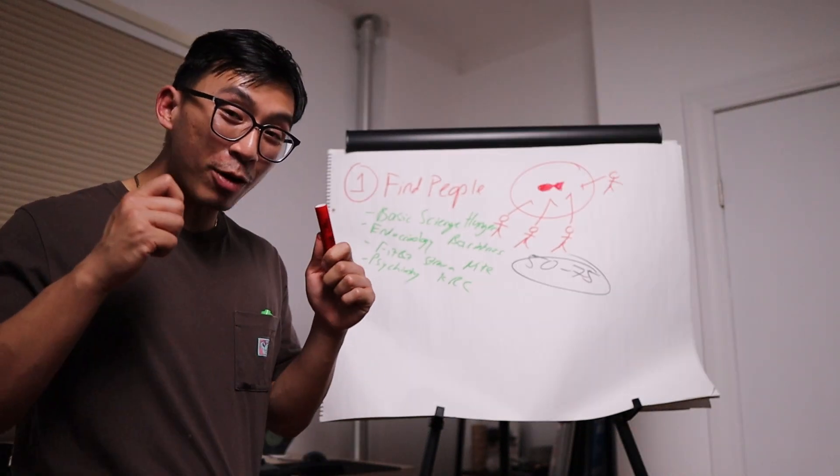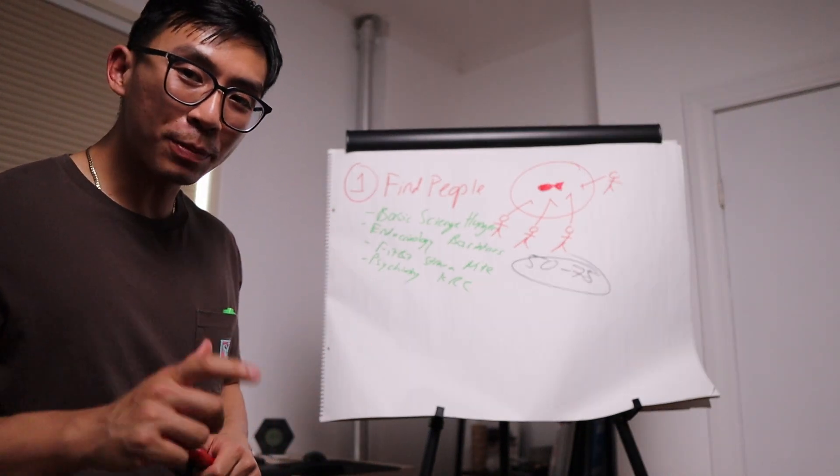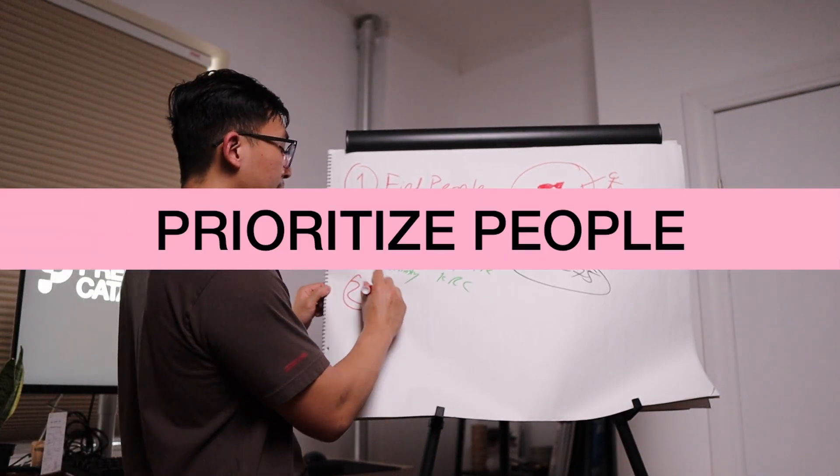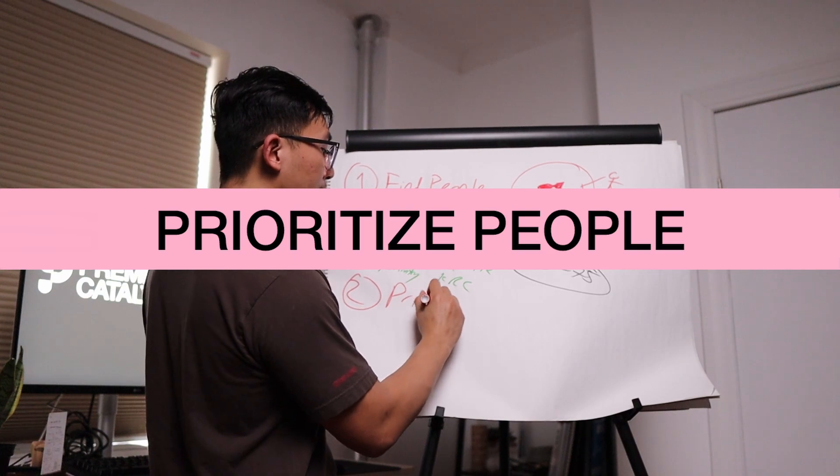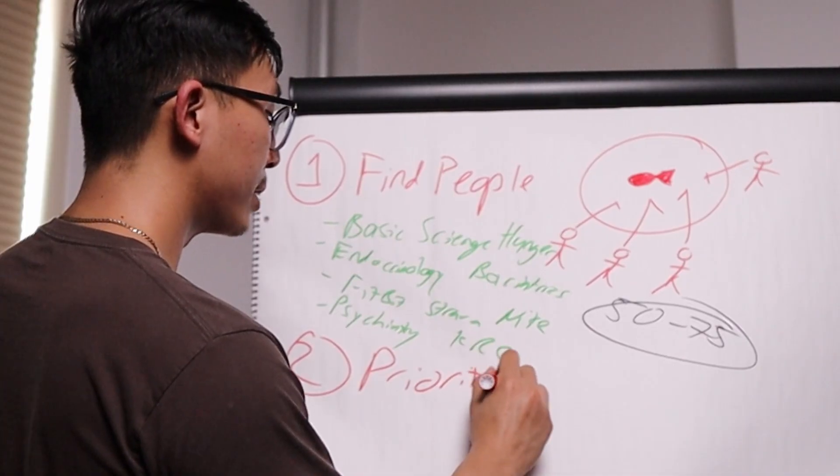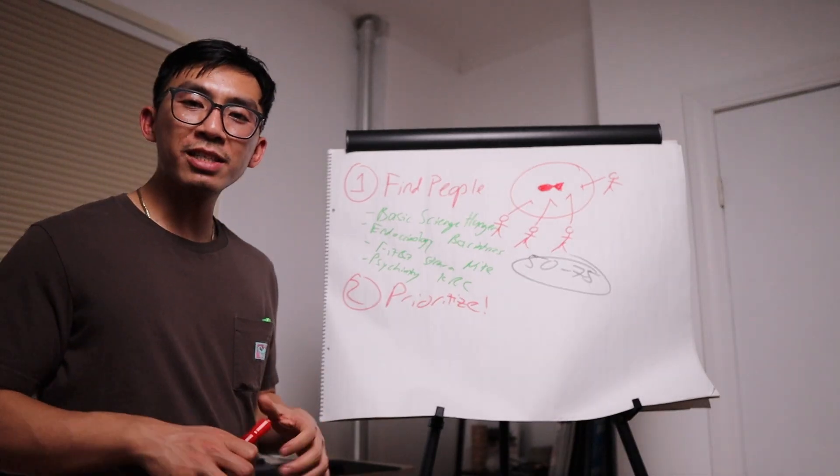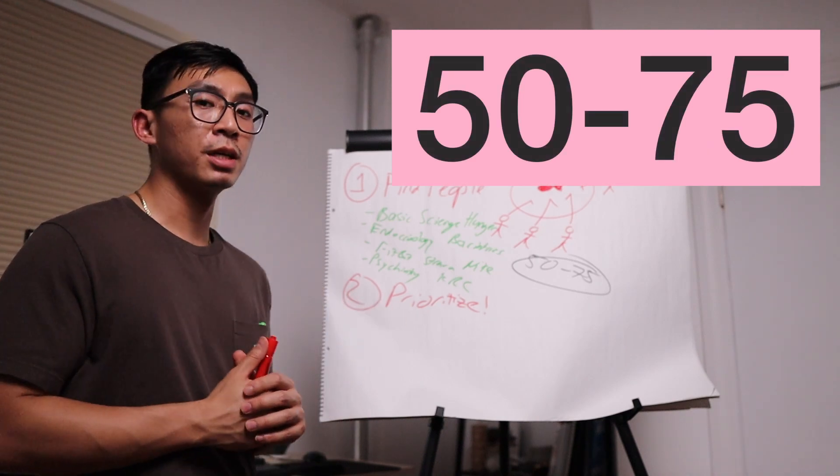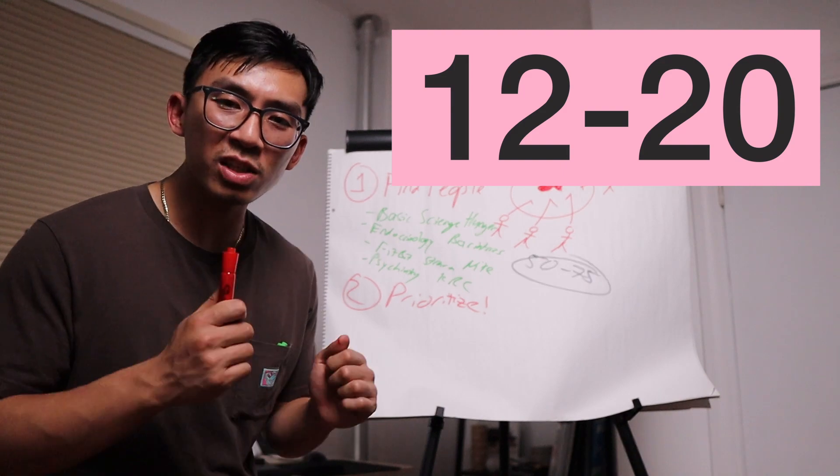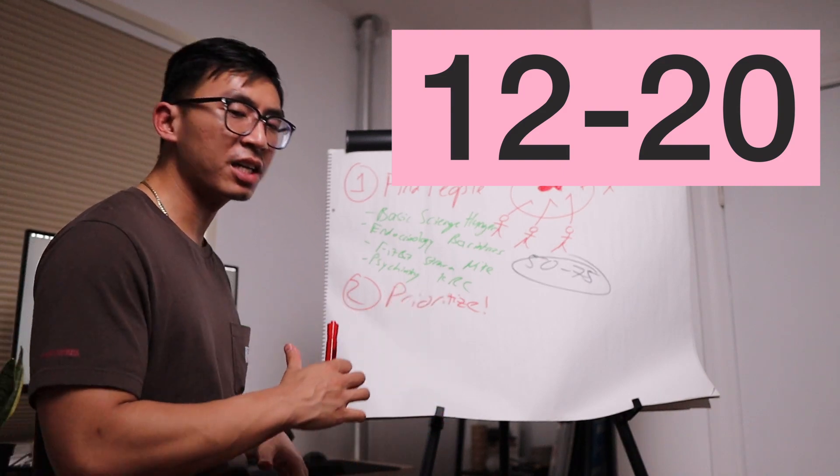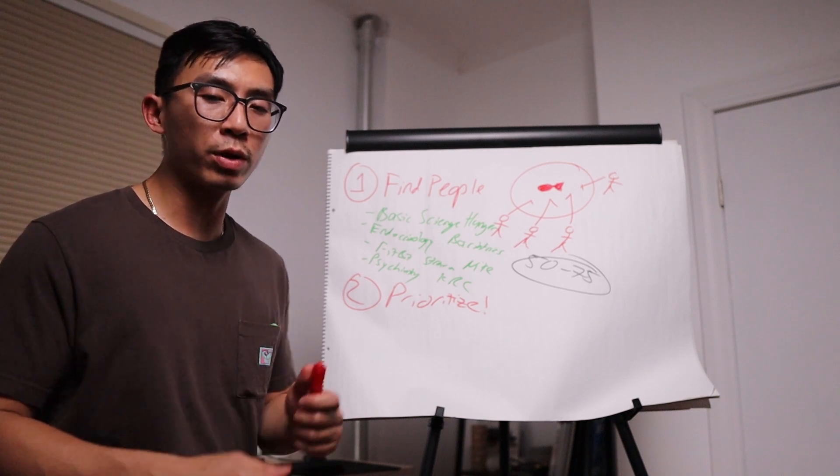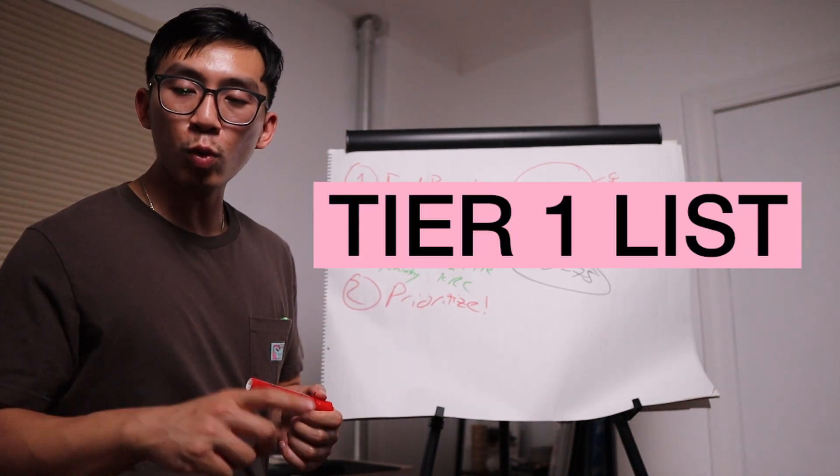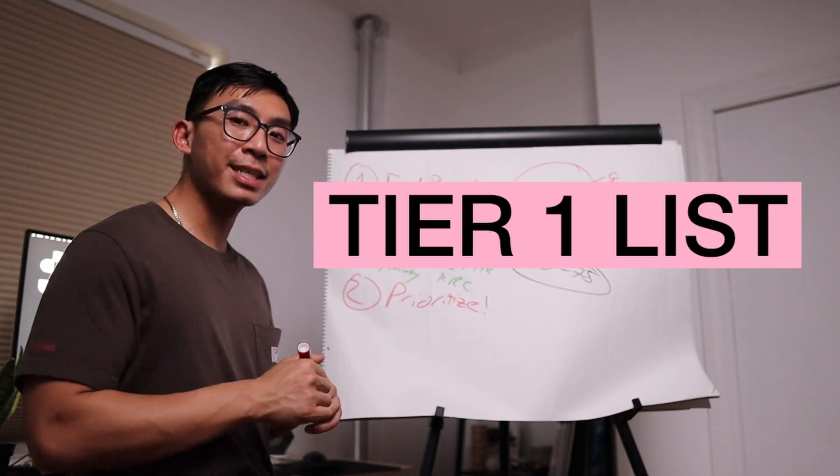And now once you've built a wide list of people that you could potentially work with, step two is to prioritize people that you would like to work with. During this step, you're looking to filter that list of 50 to 75 total emails to the 12, 15, 20 PIs, organizations, doctors that you'd really like to work with, shadow, or get to know. We call this our tier one list.